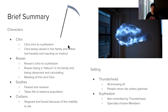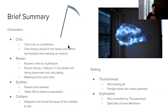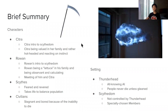We also looked at the settings of Scythe. There was the Thunderhead, which was an all-knowing AI that controlled people, and there was the Scythe, who were a group of people not controlled by the Thunderhead and were especially chosen to take lives to balance population. Civilians could not die because death was cured, and they were born into stagnation because of it.